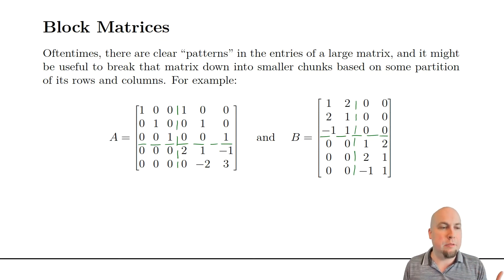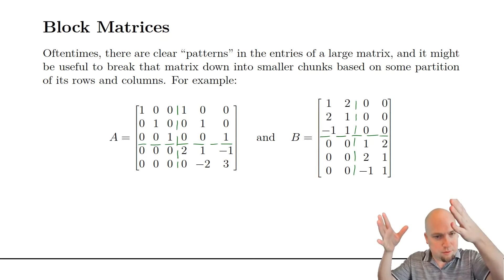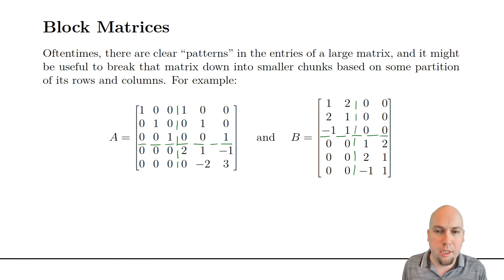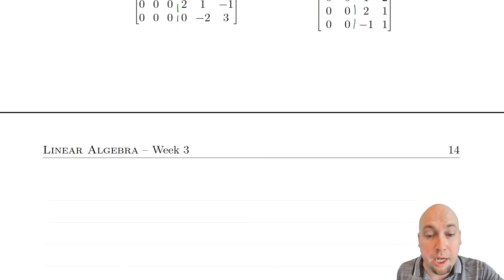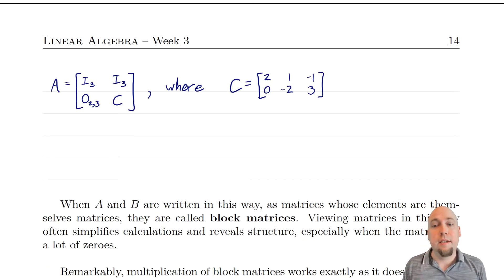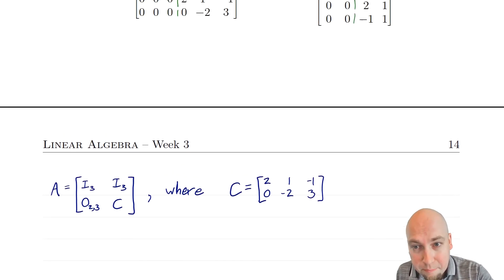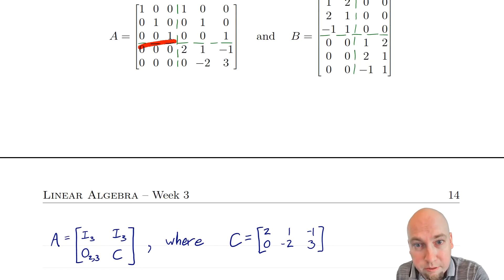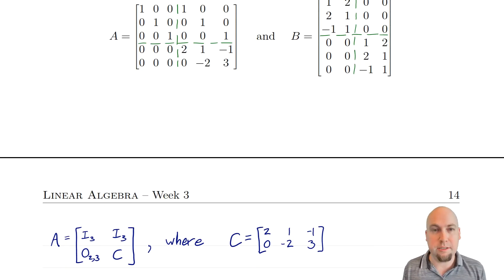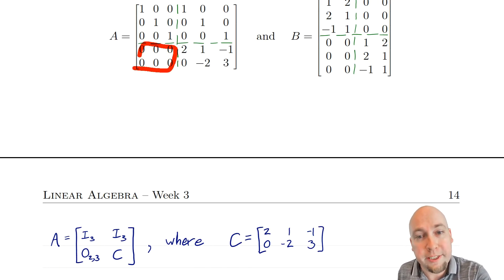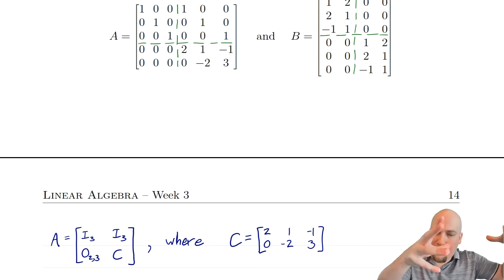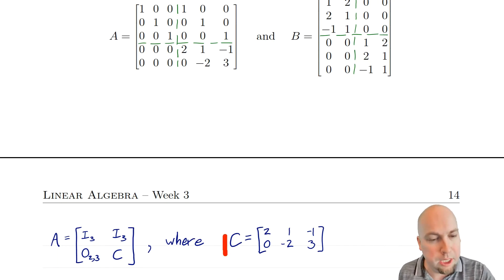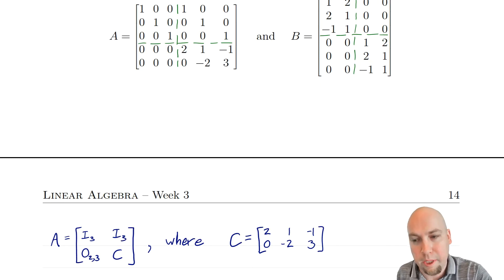These green dashed lines don't have any mathematical meaning — they're just for my own mental bookkeeping of where I'm imagining these matrices broken up. Another way of writing these matrices with this partitioning in mind: matrix A has a three-by-three identity matrix at the top left, another three-by-three identity matrix at the top right, a two-by-three zero matrix at the bottom left, and some other matrix at the bottom right — I'll just call that matrix C.